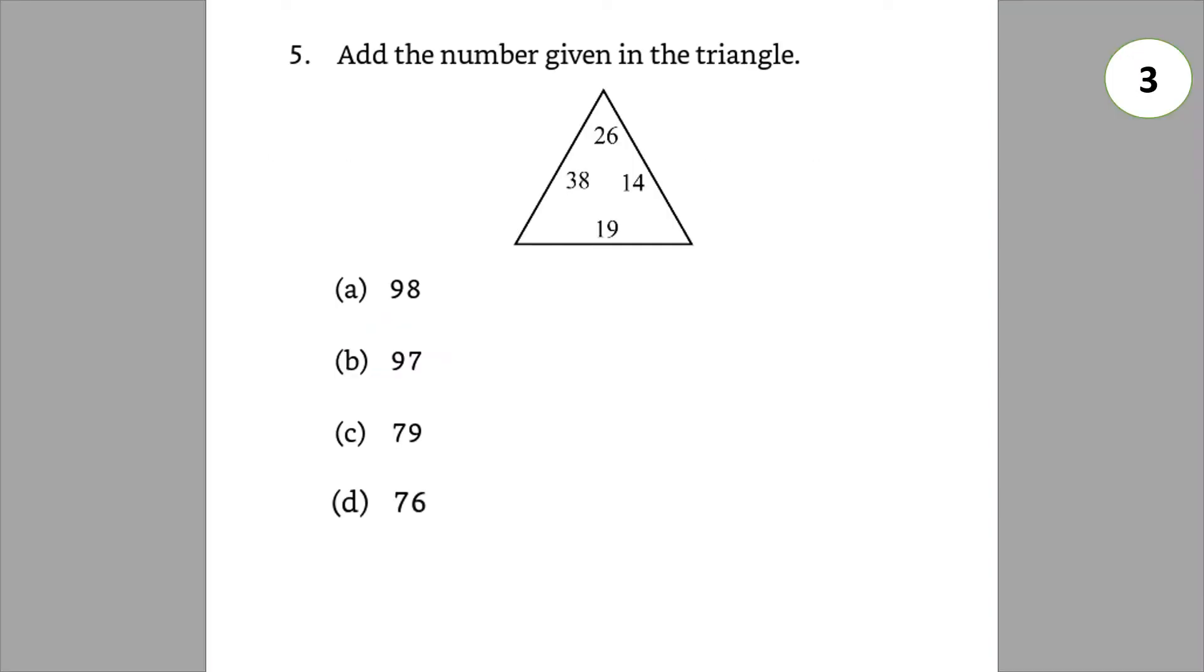Add the numbers given in the triangle. 19 plus 14 plus 26 plus 38. So if we add all 4 numbers, we'll get 97.